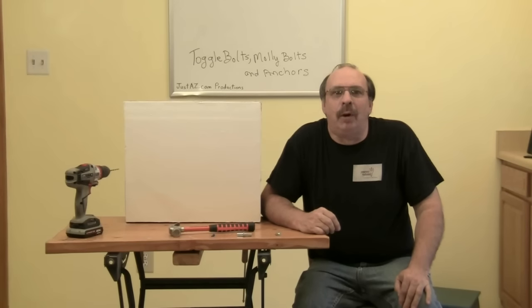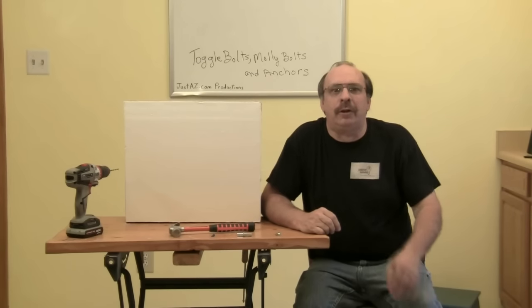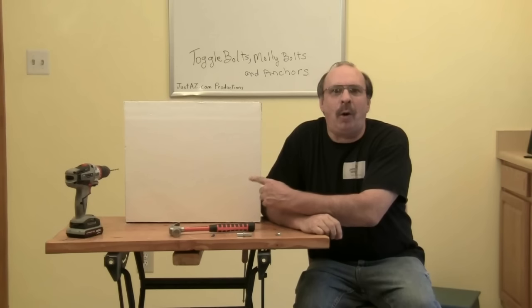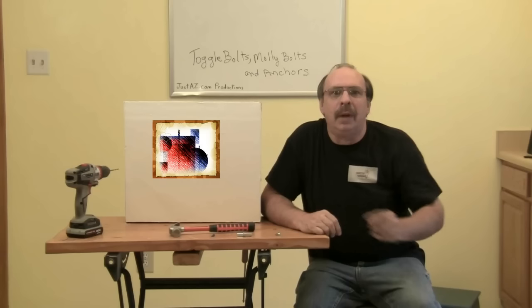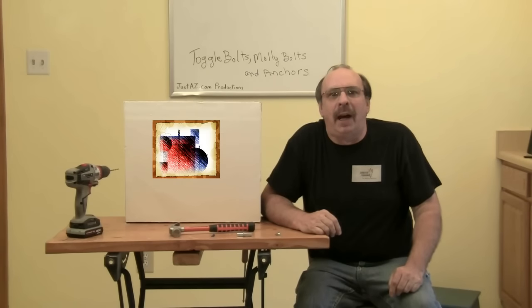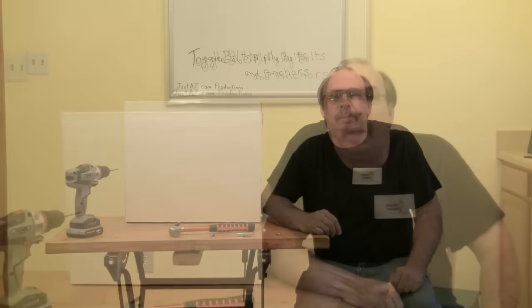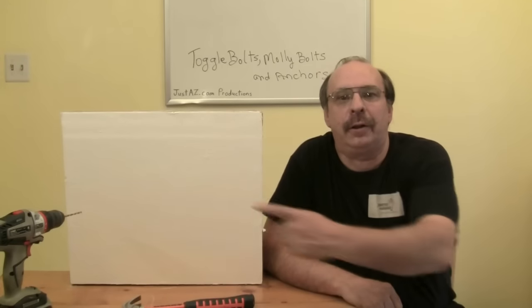Toggle bolts and anchor bolts are fasteners used to secure one object to another, such as when you hang a painting on a wall. In the best case scenario, you have a stud right where you want to hang the picture, and you can use any number of common fasteners, such as a nail or a picture hook. If you want to hang that painting in a particular spot,